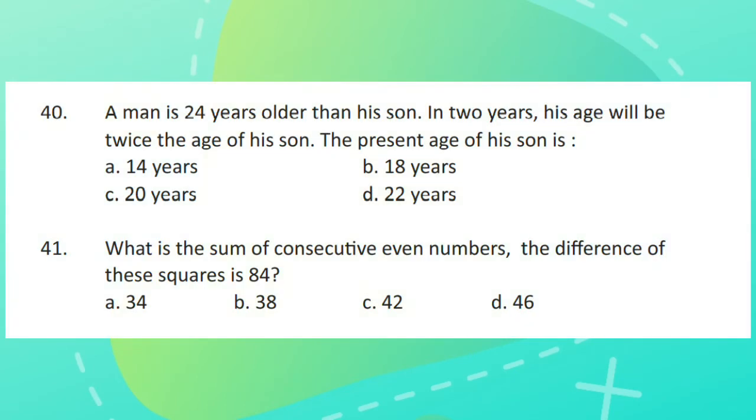Question 40. A man is 24 years older than his son. In two years his age will be twice the age of his son. The present age of his son is?